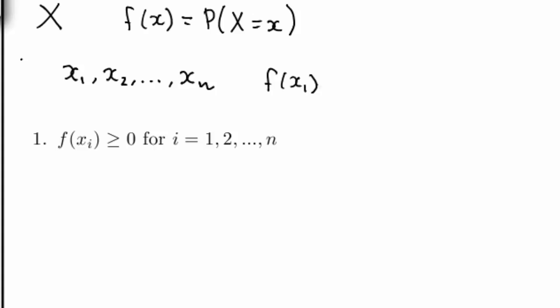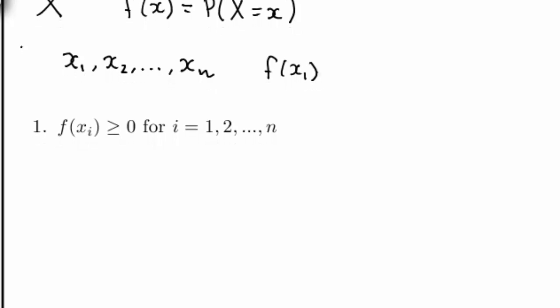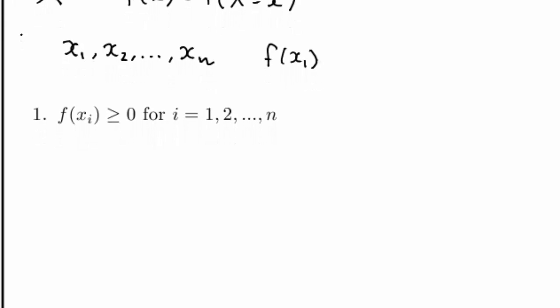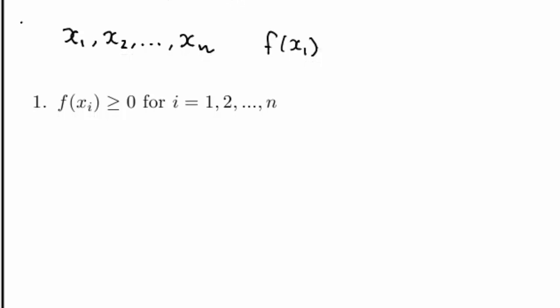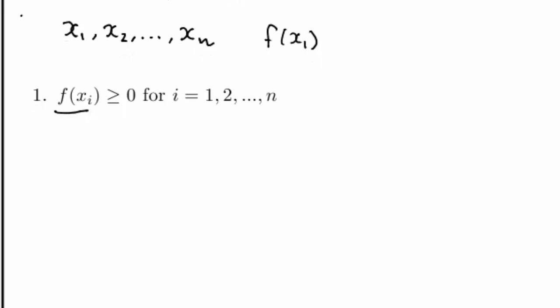So here's the first property that my probability distribution function must satisfy. f of xi must be greater than or equal to 0 for all i between 1 and n. What this says in words is that the probability of every possible outcome must be greater than or equal to 0. We cannot have negative probabilities.